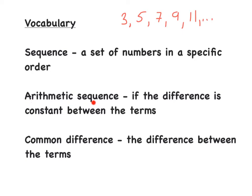An arithmetic sequence is one where the difference is constant between the terms. What is the difference between these terms? To go from one number to the next — from 3 to 5, you add 2; 5 to 7, add 2; 7 to 9, add 2; 9 to 11, add 2. So the common difference is plus 2.